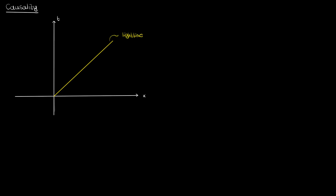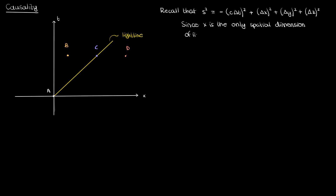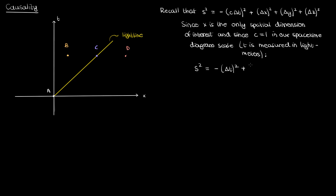This leads to the idea of causality. To illustrate, let's draw a spacetime diagram with one spatial dimension. Time is measured in light meters, so the world line of light — the light line — will be at a 45-degree angle relative to both the time axis and the x axis. Suppose I have two events A and B with A at the origin and B inside the light cone, an event C that falls on the light line, and an event D that is outside the light line.